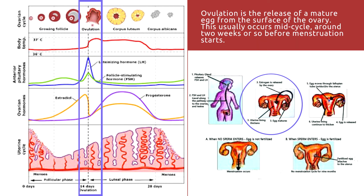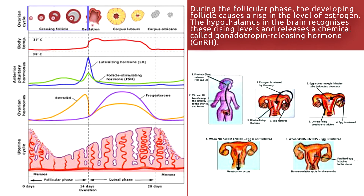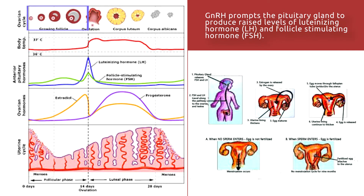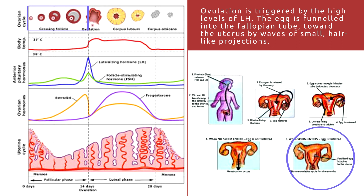Ovulation is the release of a matured egg from the surface of the ovary, which usually occurs mid-cycle around 2 weeks. During the follicular phase, the developing follicle causes a rise in estrogen levels. The hypothalamus recognizes these rising estrogen levels and releases GnRH, which prompts the pituitary gland to produce raised levels of LH and FSH. Within 2 days, ovulation is triggered by the high levels of LH. The egg is then funneled into the fallopian tube toward the uterus by waves of small hair-like projections.